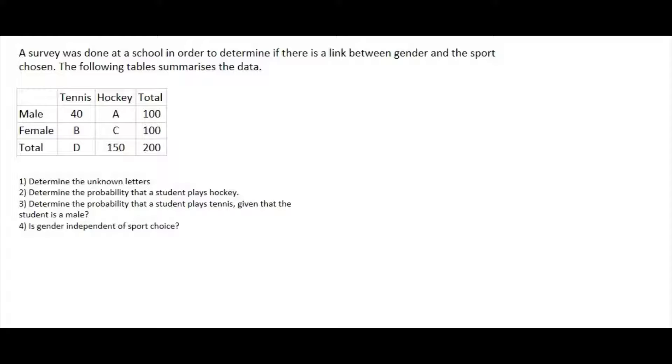So the first question says, determine the unknown letters. Well, these are super easy. So for example, the males, it tells us if we look right to the end over here, that there should be 100 males, and so A would have to be 60.